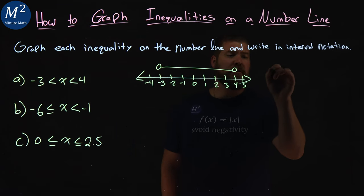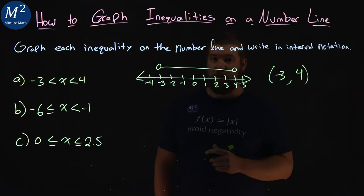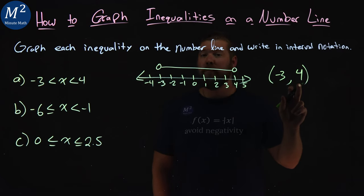Now to write this in interval notation, parentheses because we're not equal to negative 3, to a positive 4, again would be the second parentheses. And there we have our interval notation, x is between negative 3 and positive 4.